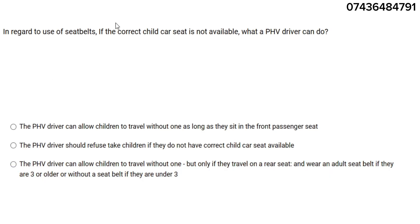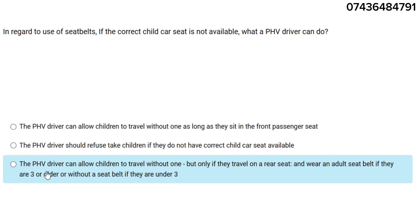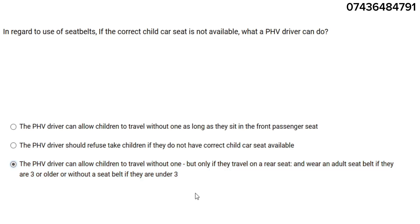In regard to use of seat belts, if the correct child car seat is not available, what can a PHV driver do? The PHV driver can allow children to travel without one, but only if the child is on a rear seat and wears an adult seat belt if they are three or older, or without a seat belt if they are under three. Please remember — this is very important.